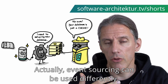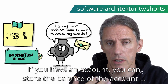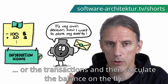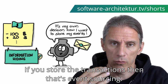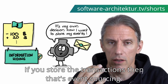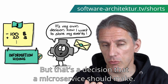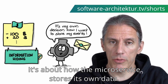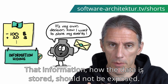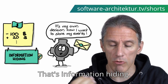Actually, event sourcing can be used differently. If you have an account, you can store all the transactions and then calculate the balance on the fly — if you store the transactions, that's event sourcing. But that's a decision that a microservice should make — it's about how the microservice stores its own data. And that information, how the data is stored, should not be exposed. That's information hiding.